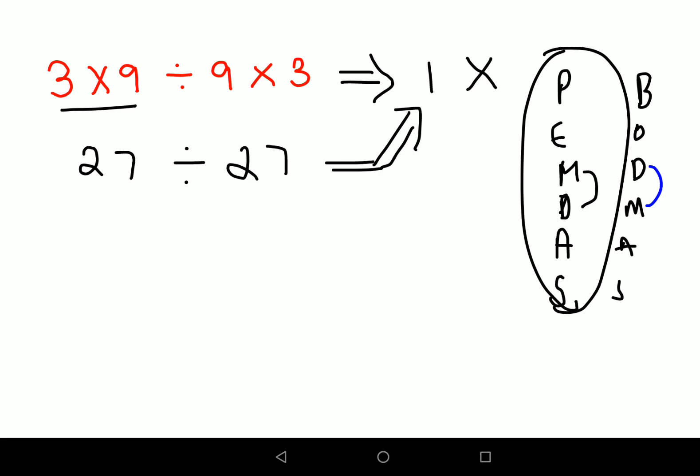So now what happens in this case is, you will do 3 into 9 divided by 9, that is 1 into 3, so here your answer comes out to be 9. Now imagine if one answer is coming for PEMDAS and 9 is the answer which is coming for BODMAS, means there is some discrepancy, right?